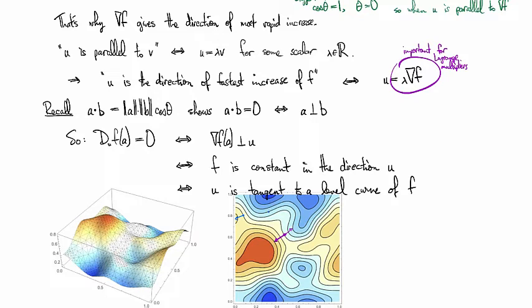Like, if I were to evaluate the gradient here, it would point this way. If I were to evaluate the gradient here, it would point this way. If I were to evaluate the gradient here, it would point this way. And so you can see that they're pointing in the direction that would take you to the top of this hill right here.